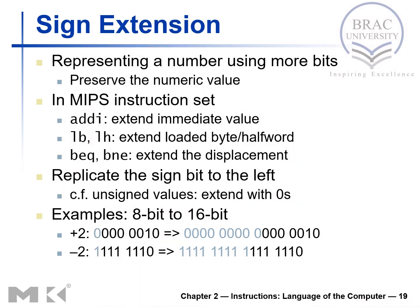Sign extension is representing a number using more bits. Let's say we have a value which is less than 32 bits, and we are dealing with a 32-bit architecture. The value cannot be less than 32 bits, so we extend the value so that it can be represented in 32 bits without changing the actual numerical value.